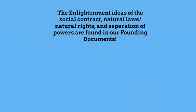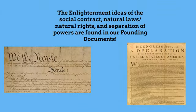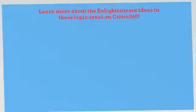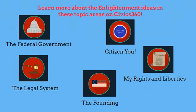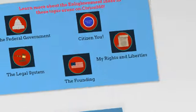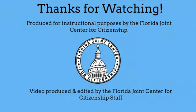The big ideas of the Enlightenment certainly had a huge impact on our Founding Fathers. The ideas of the social contract, natural law and natural rights, and separation of powers are all found in our founding documents like the U.S. Constitution and the Declaration of Independence. Learn more about these Enlightenment ideas on Civics 360. This video is produced by the Florida Joint Center for Citizenship. Thanks for watching.